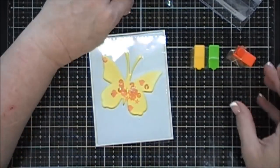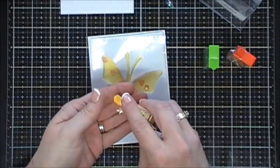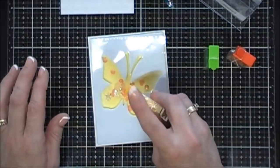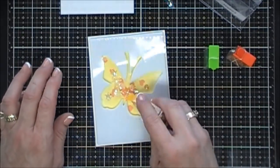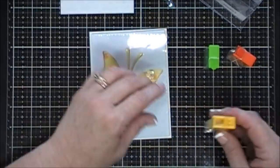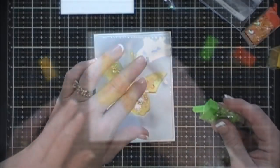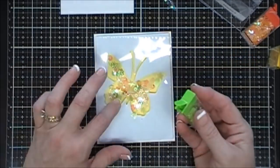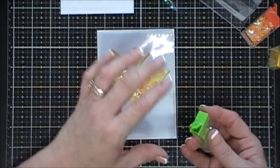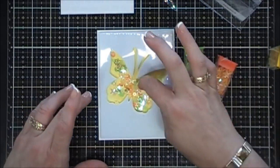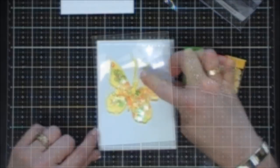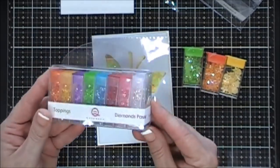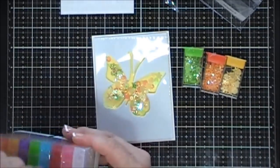These sequins are neat because they have two different shapes or two different sizes of stars, hearts, flowers, and regular sequins. So they're just beautiful. I added yellow, orange, and green to my butterfly.